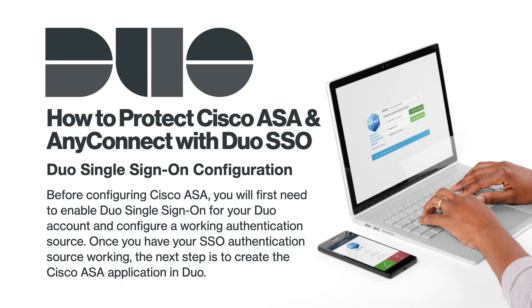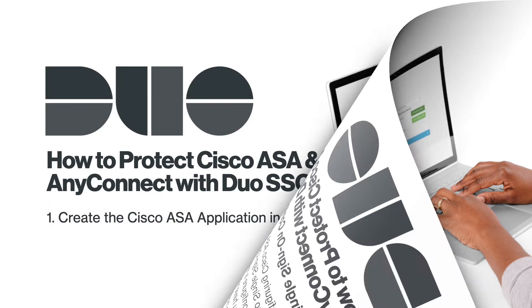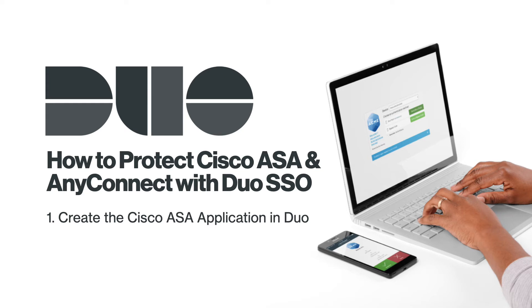Before configuring Cisco ASA, you will first need to enable Duo Single Sign-On for your Duo account and configure a working authentication source. Once you have your SSO authentication source working, the next step is to create the Cisco ASA application in Duo. Let's start our walkthrough by creating the Cisco ASA application in Duo.